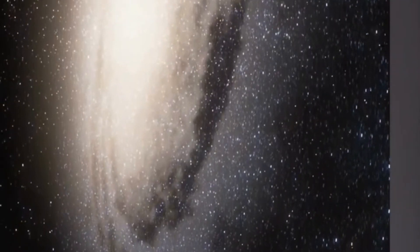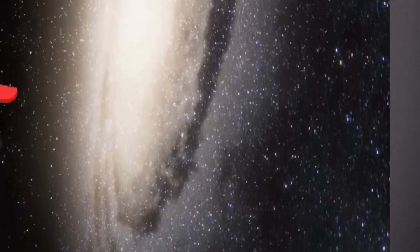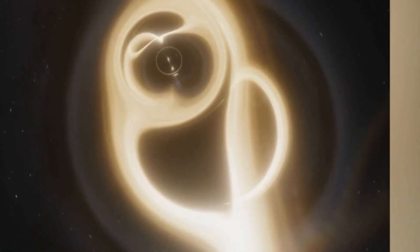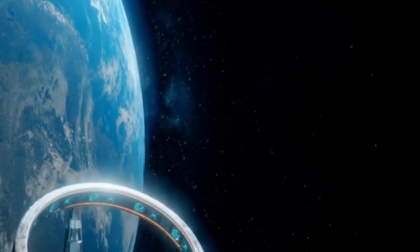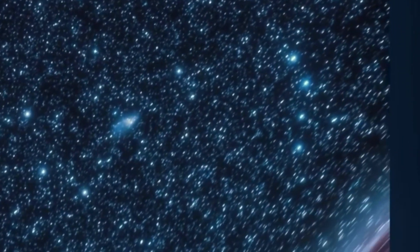The identification of black holes traces back to objects like Cygnus X-1, and a pivotal moment arrived in 1974 when physicist Stephen Hawking bet against the idea of a black hole's existence, ultimately conceding defeat in 1990.